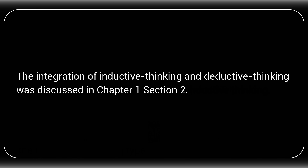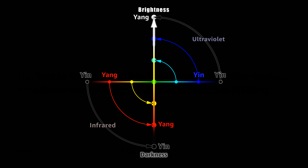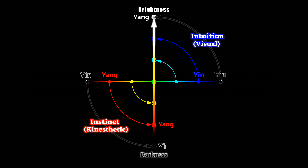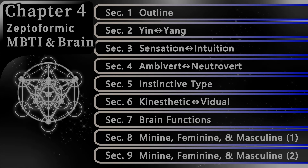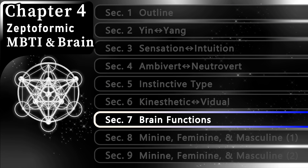Note: the integration of inductive thinking and deductive thinking was discussed in Chapter 1, Section 2. Instinct and Intuition: in this figure, the lower left domain represents infrared and the upper right domain represents ultraviolet. The former is related to the function of instinct, and the latter is related to that of intuition. That is, instinctive perception is mainly kinesthetic — such as the gut feeling — and intuitive perception is mainly visual, such as spiritual vision.